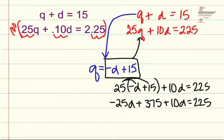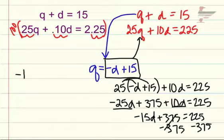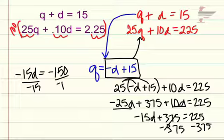Combine your like terms. Negative 25D plus 10D is negative 15D plus 375 equals 225. Subtract 375 from both sides. Negative 15D is equal to 225 minus 375 is negative 150. Divide both sides by negative 15, and D is equal to 10.